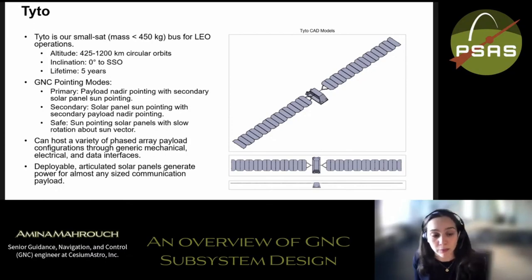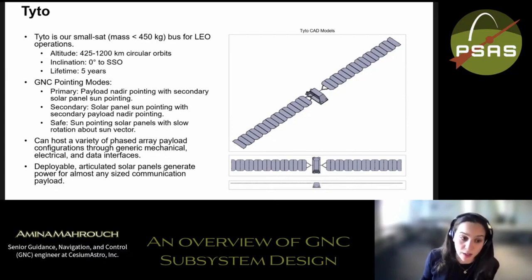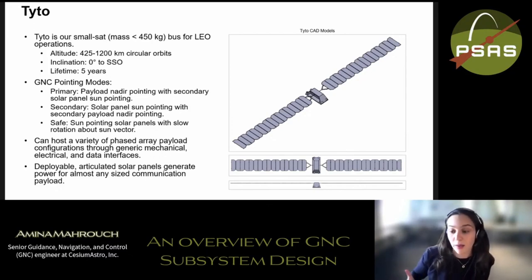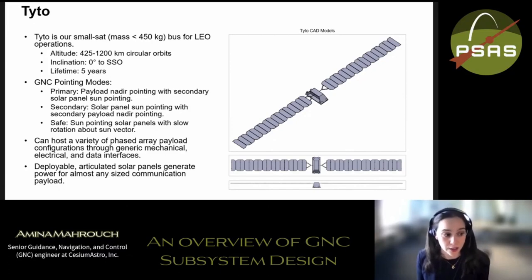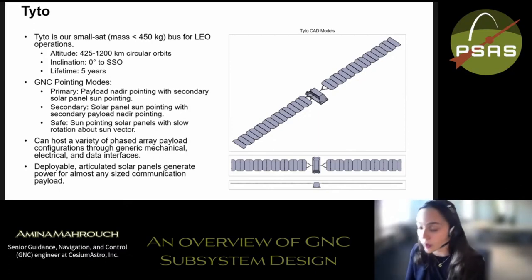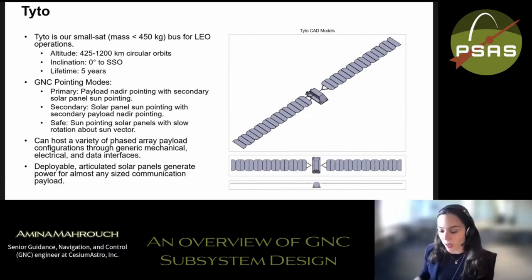We also defined some baseline pointing modes. The primary mode has the nadir or payload face pointing toward Earth, with a secondary constraint that solar panels point toward the sun, and vice versa for the secondary pointing mode. Our third pointing mode is safe mode, which points the solar panels toward the sun and rotates about that axis to continuously generate power. Since we are our own customers and our payloads are continuously evolving, we also go through various design reviews as we build up to the final product, with different milestones to meet at each stage.